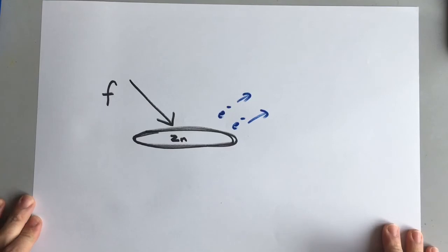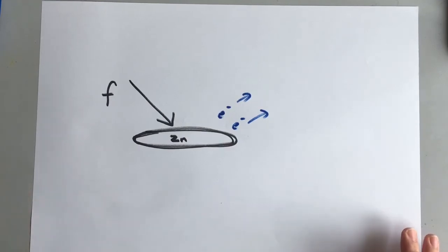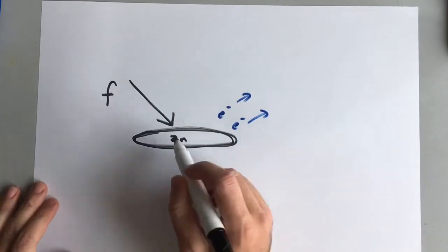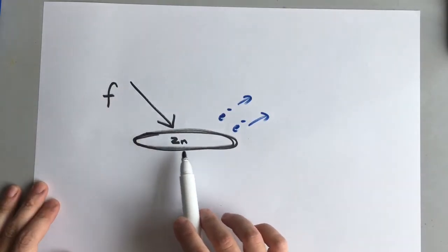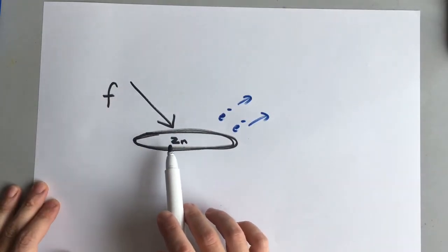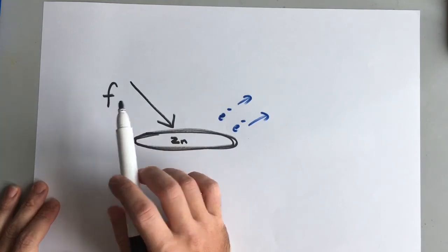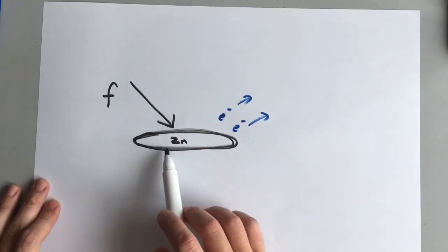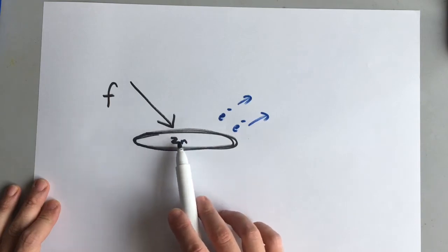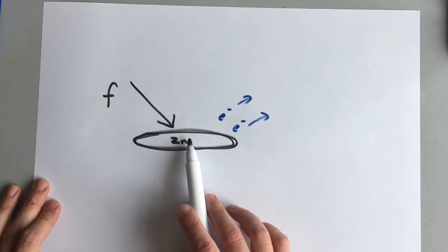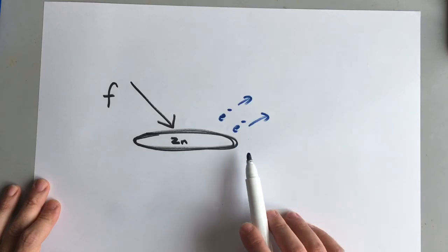The strange thing about that is that according to classical physics, what should happen is if light is a wave, then the energy should slowly build up. And if the frequency is lower, then the light has less energy, so it should take longer. But the energy should build up in the zinc and you should start getting electrons released.